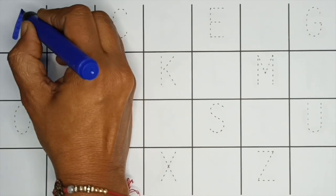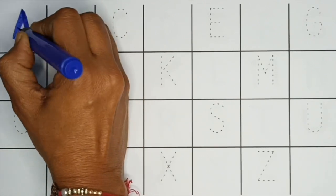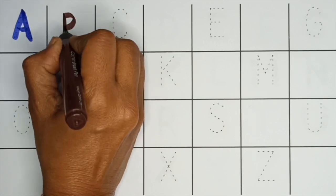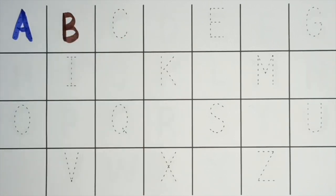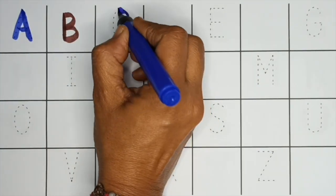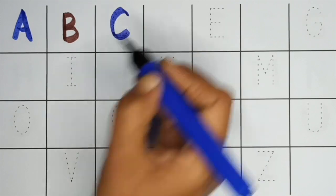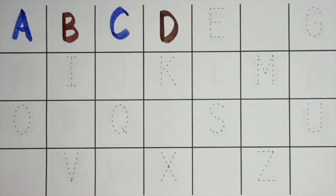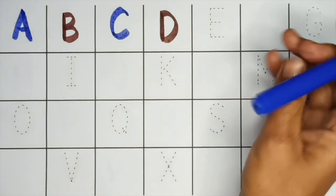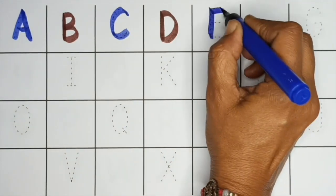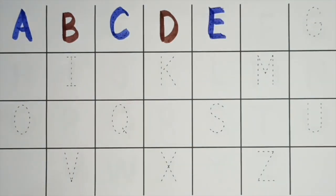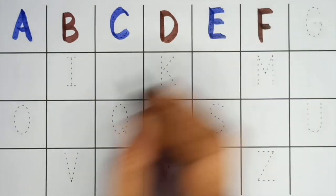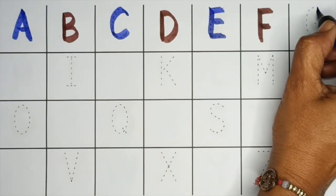A. A for Apple. B. B for Ball. C. C for Cat. D. D for Dog. E. E for Elephant. F. F for Fish. G. G for Grapes.